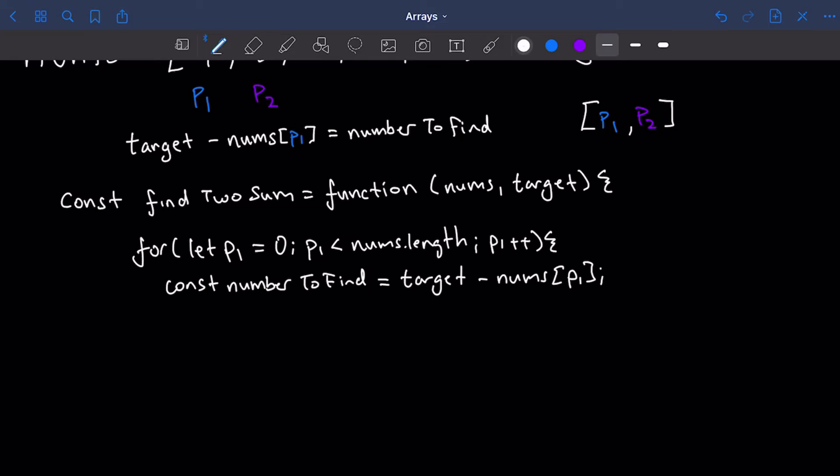Now that we have the number to find, we're going to compare it against every value other than p1, and that we're going to do using p2. And it's going to be a second for loop. The only difference is that this for loop's initial value is not going to be zero. We want to make sure that p2 points to every number after p1, and the easiest way to do that is just to set p2 equal to p1 plus one. p2 needs to be less than nums.length, and p2 is also going to increment.